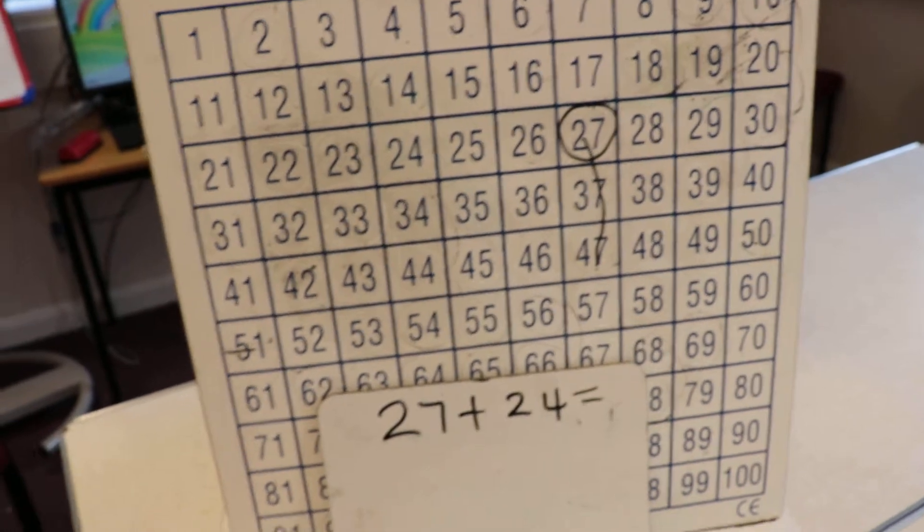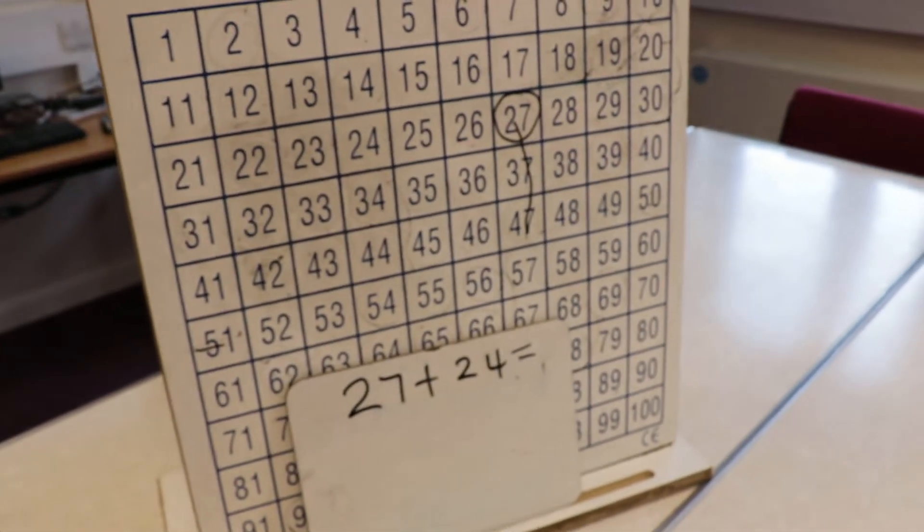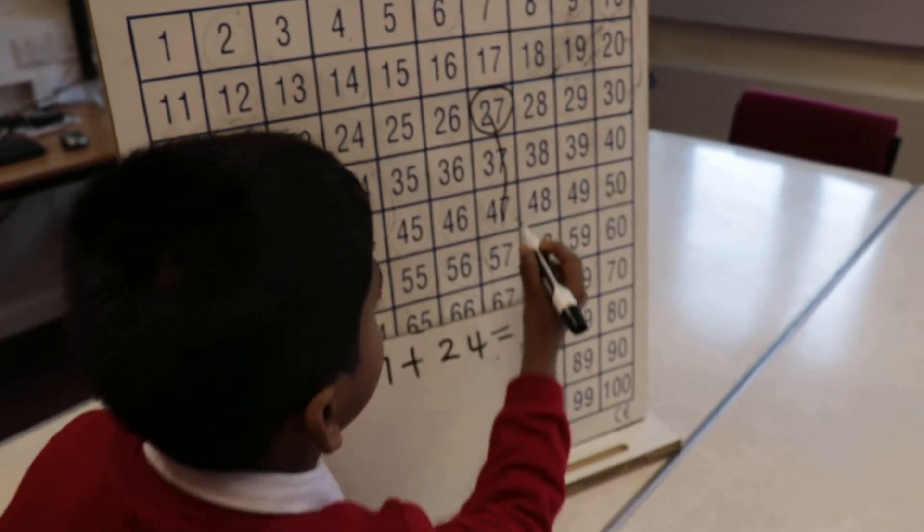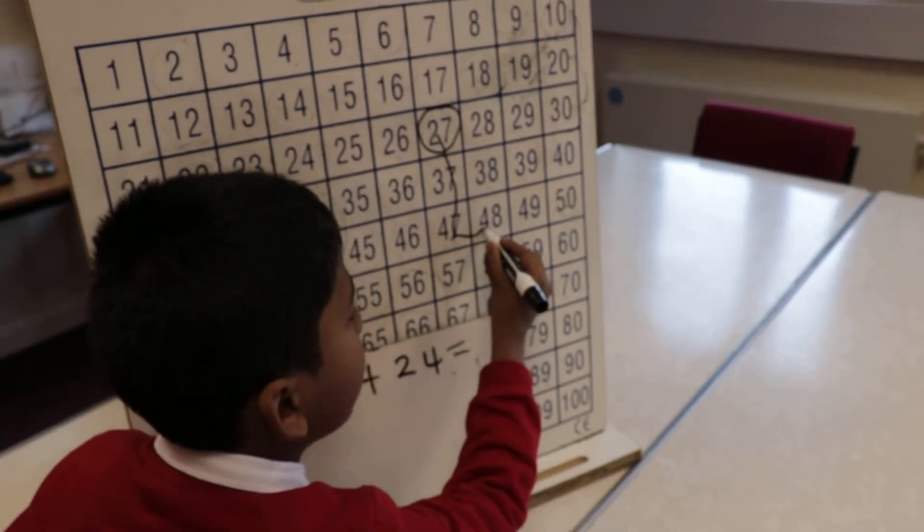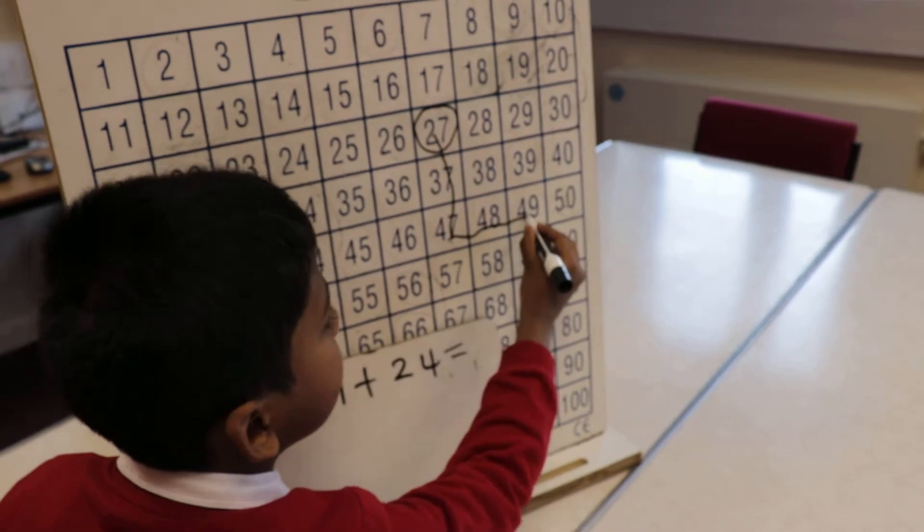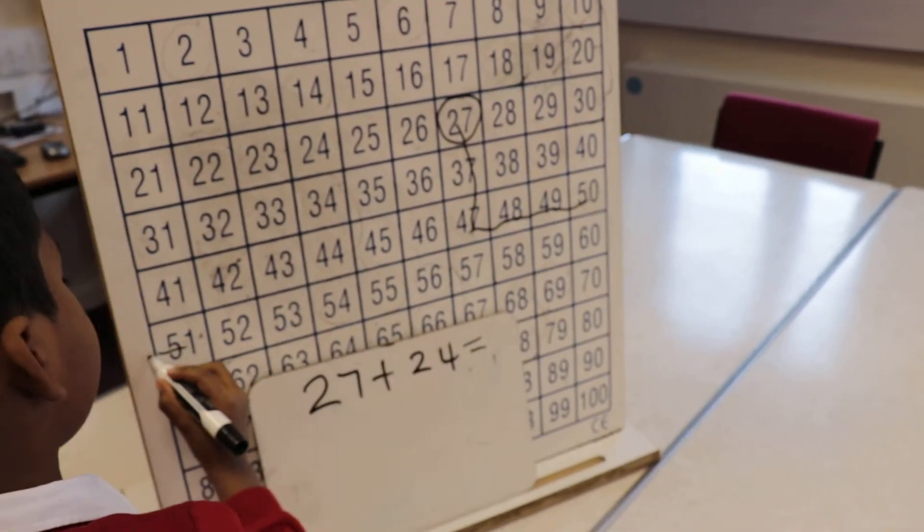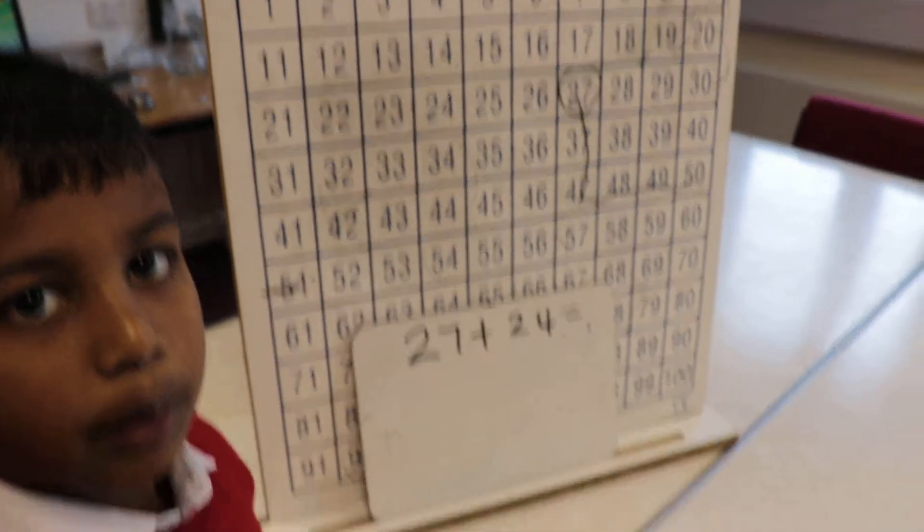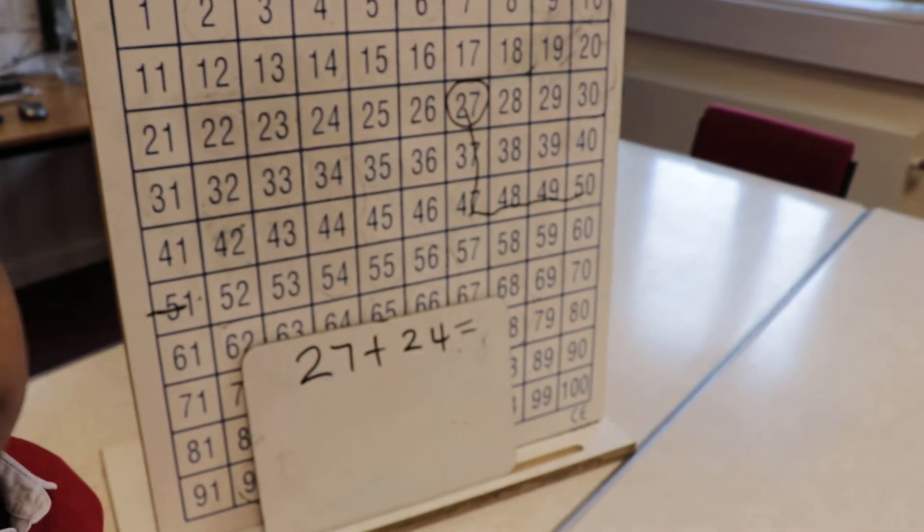And then I have to add four to it, so I know I'll be going sideways. So, I go sideways four squares, 48, 49, 50, and then I reach 51. So, that's my answer I'm going to write in my number sentence.